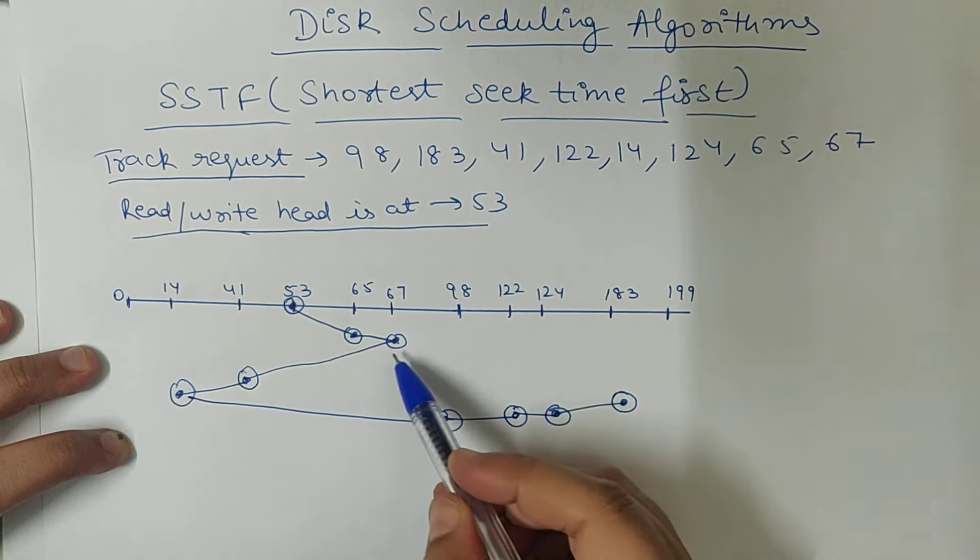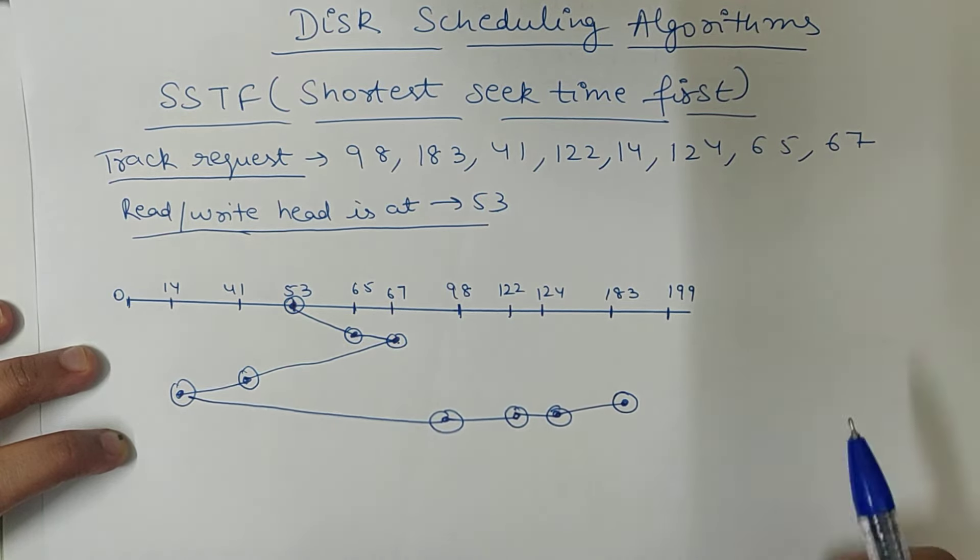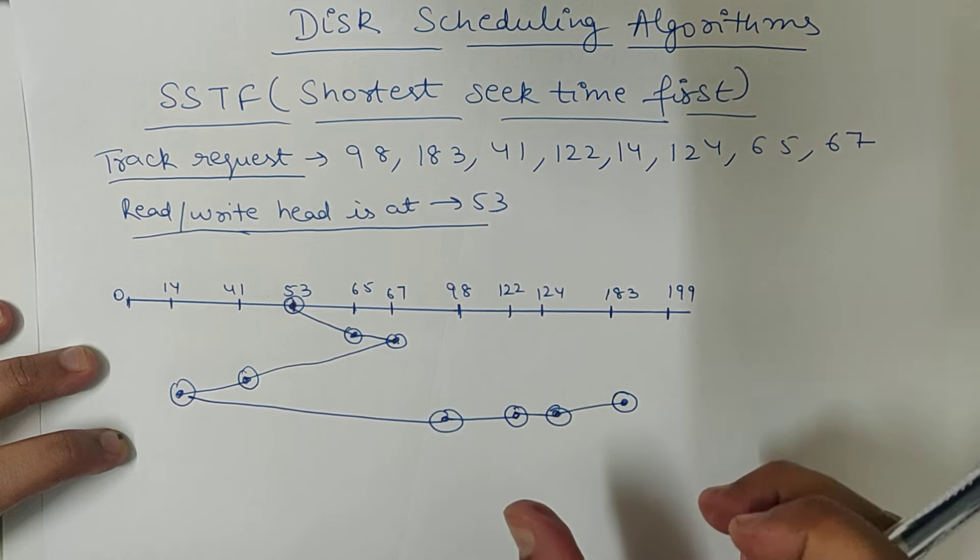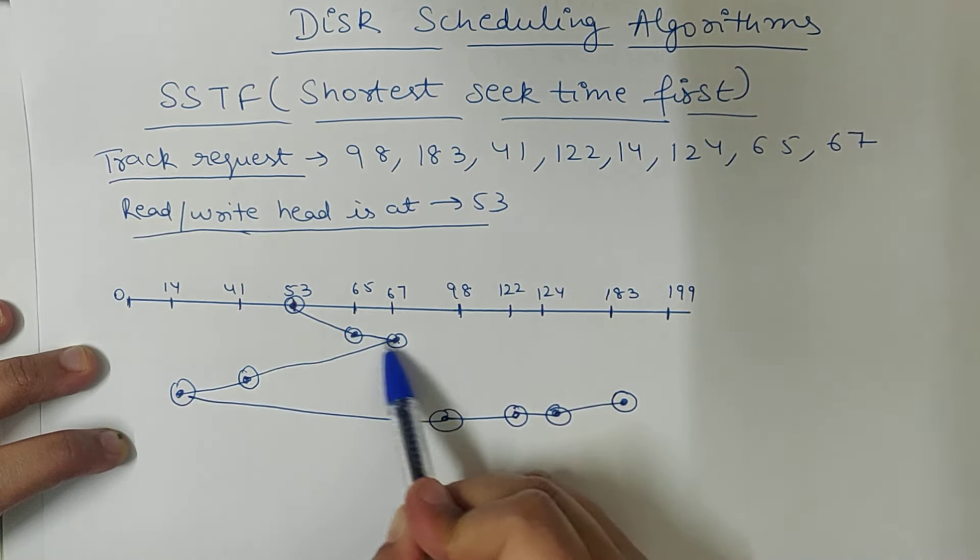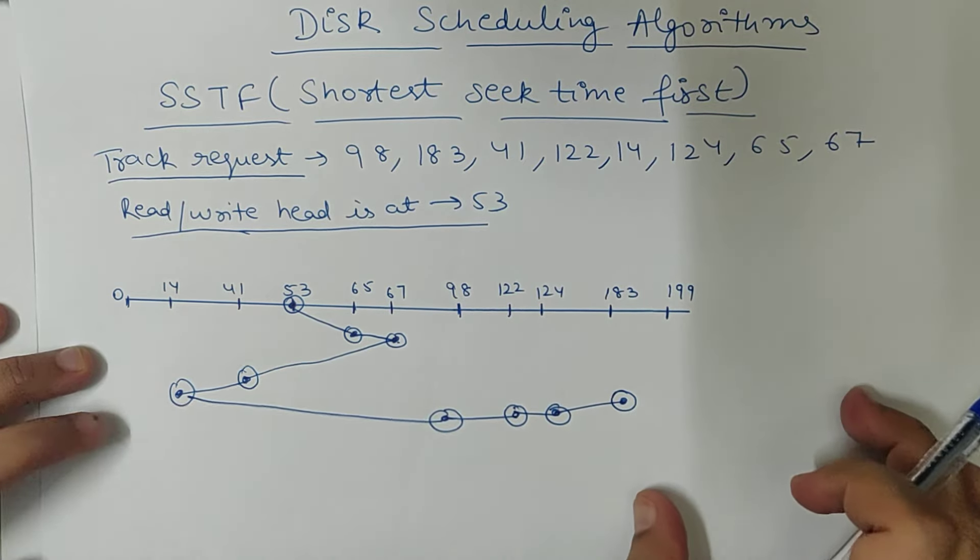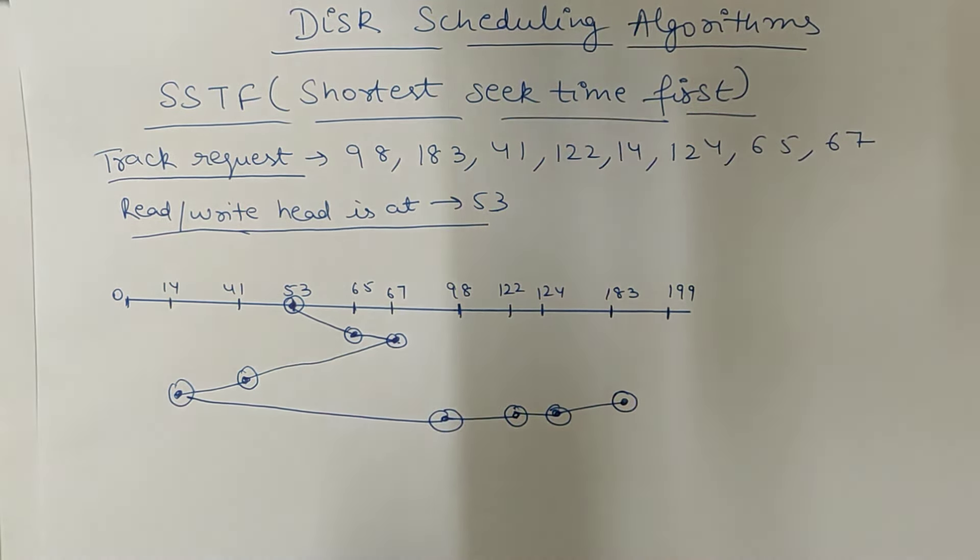The time is less. If it is 65, then it will be less time to go to 67. So, we will use this algorithm to follow this so that the moment of the time is less.